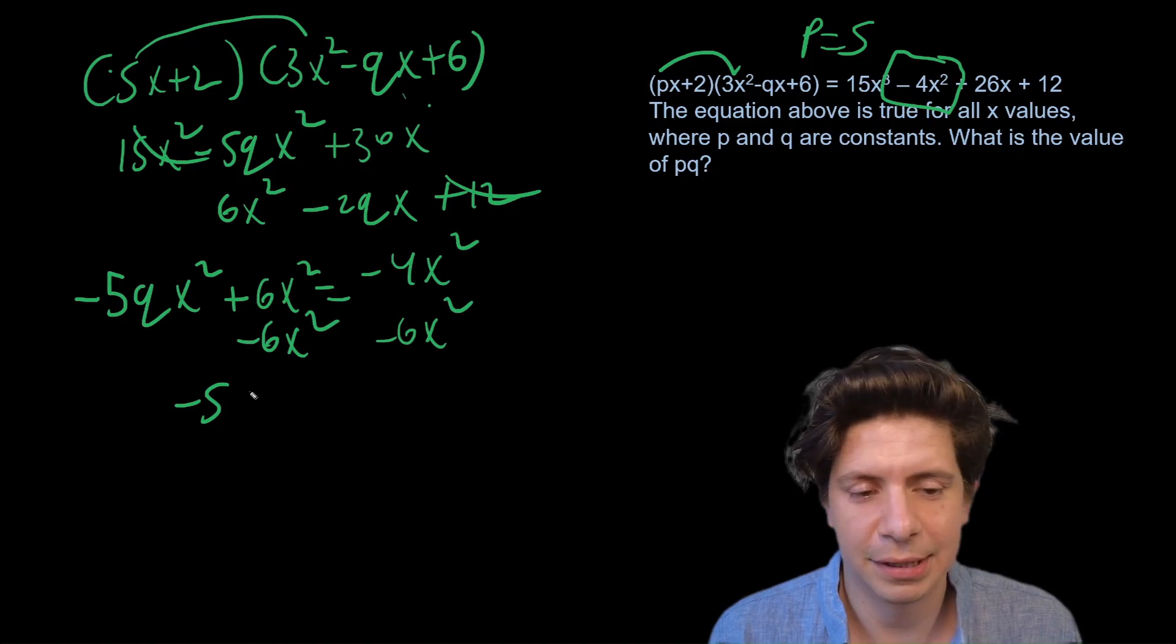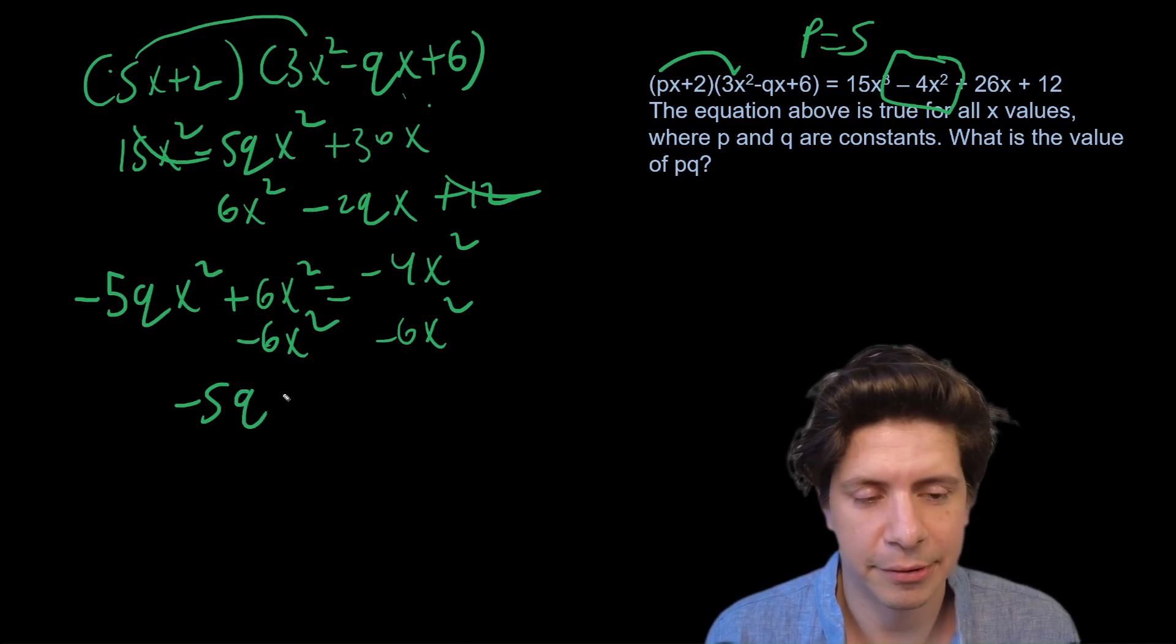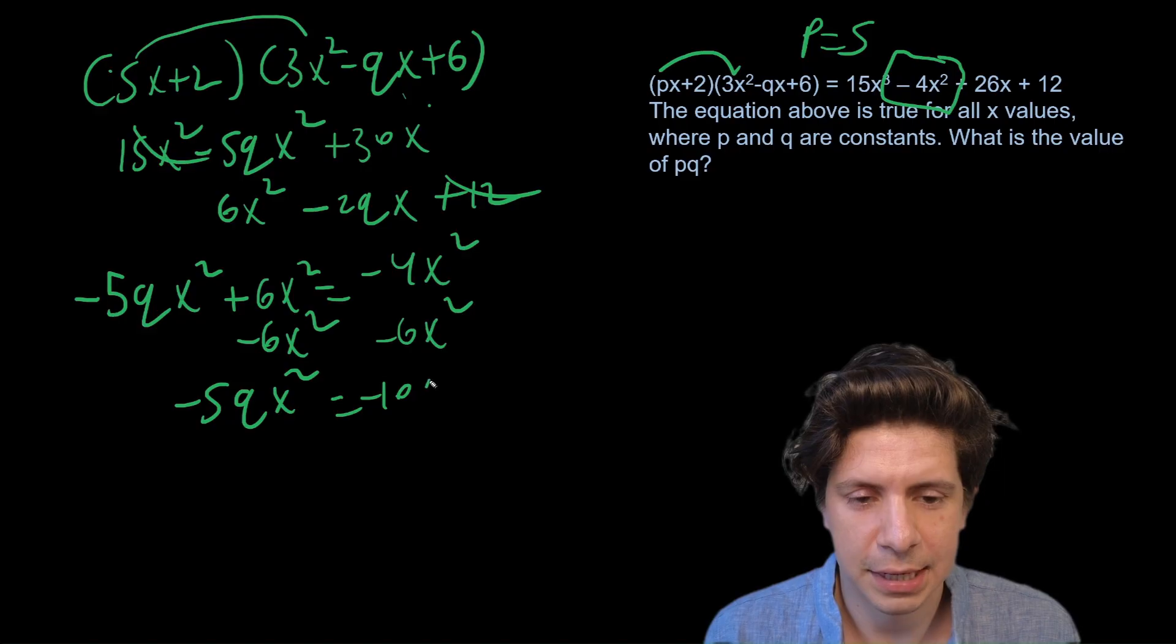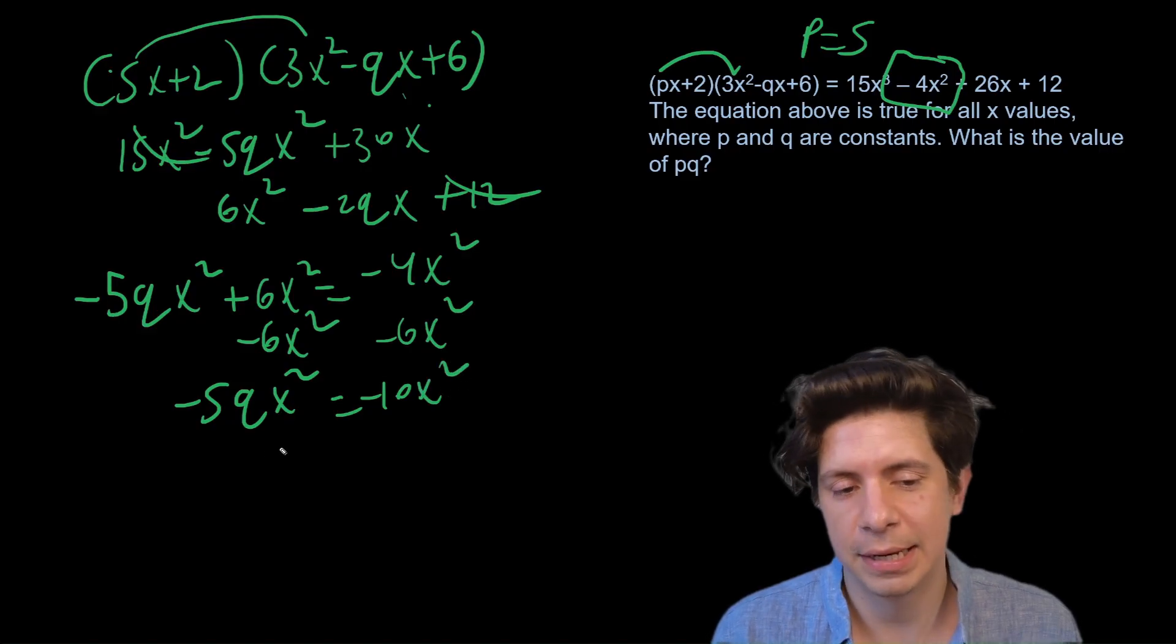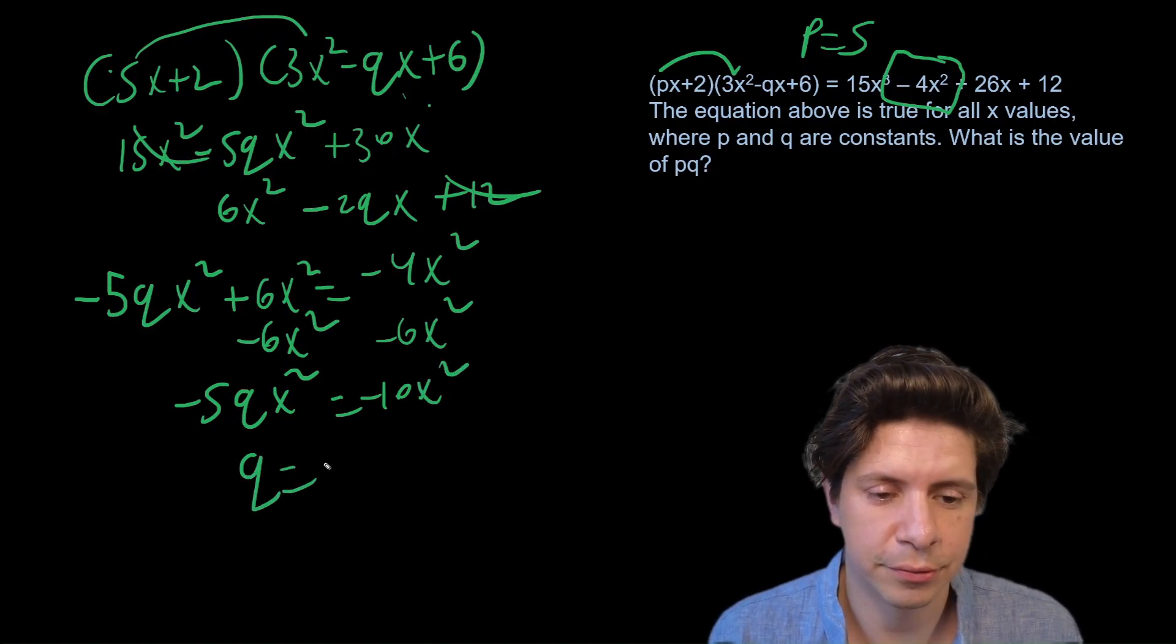And honestly we could eliminate the x² because they're all there anyway, but I'll just keep them in for one last step. So -5qx² equals -10x², and then we divide by -5x² and q equals 2.